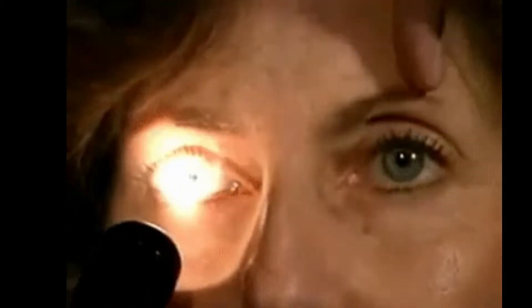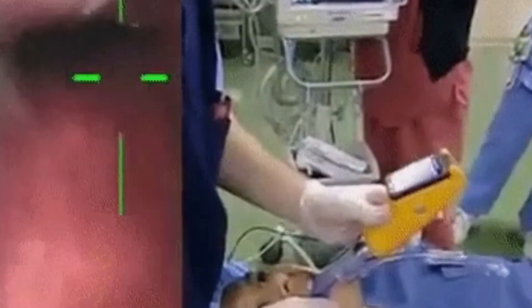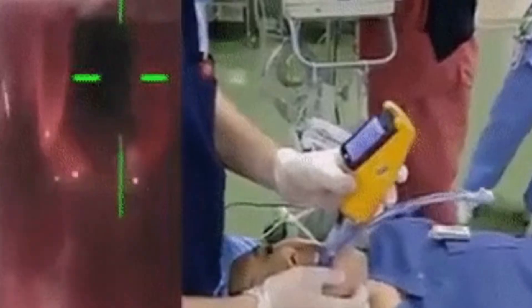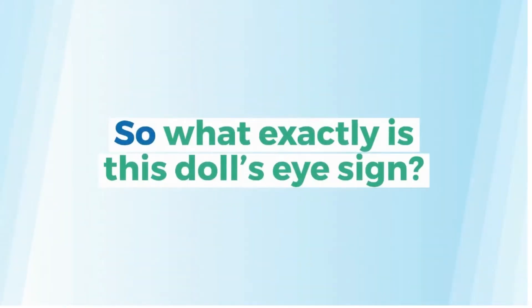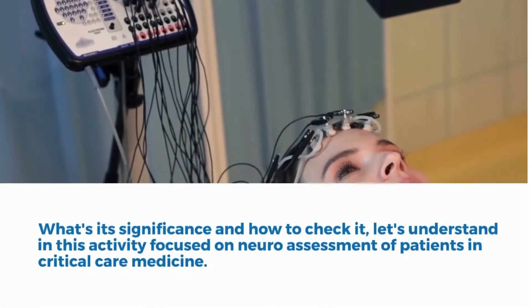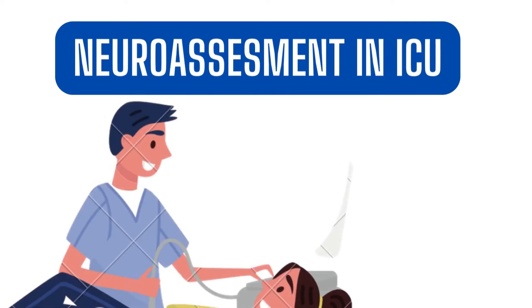The ER doctor then looked for the Doll's eye sign of the patient, which turned out to be negative. The next thing the doctor did was intubate the patient to get an immediate CT scan, and admitted the patient to ICU. So what exactly is this Doll's eye sign? What's its significance and how to check it? Let's understand in this activity focused on neuroassessment of patients in critical care medicine.